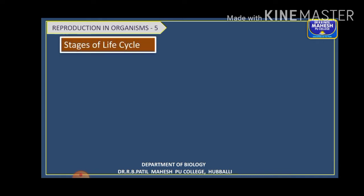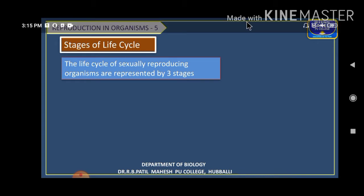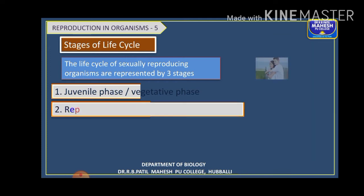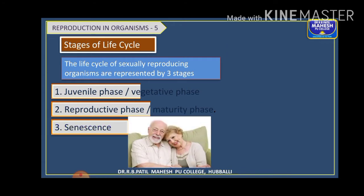Each and every sexually reproducing organism has to pass through three phases in its lifespan or life cycle. The first phase is the juvenile phase, or vegetative phase in plants. The second phase is the reproductive phase, also called the maturity phase. The third phase is the senescence phase, or the phase of old age.